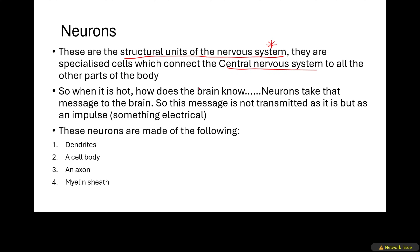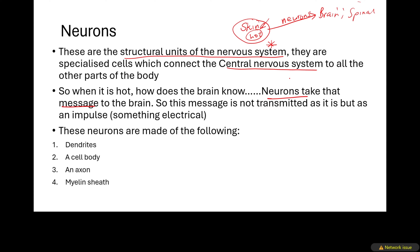Neurons connect the central nervous system to all the other parts of the body. Your skin feels that it is hot — that heat is the stimulus, a change in the environment. How does that get to the central nervous system? It moves through neurons. Neurons are those specialized cells that transmit the message of heat from the skin, through neurons, all the way to the brain and spinal cord.